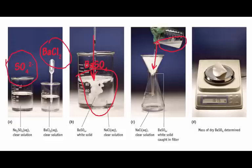Now there are two important points. First of all, we want to add just enough barium chloride so that all the sulfate is precipitated. And once we do that, we want to make sure that all of the barium sulfate is captured by that filter.